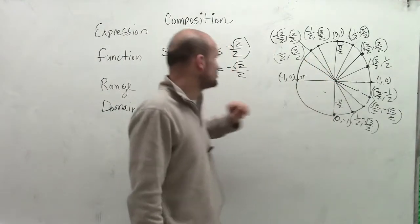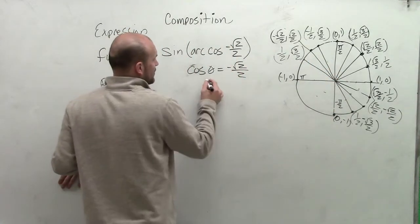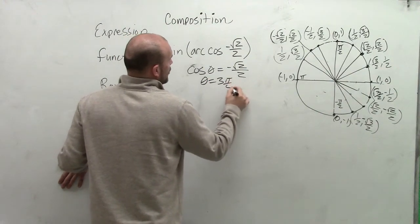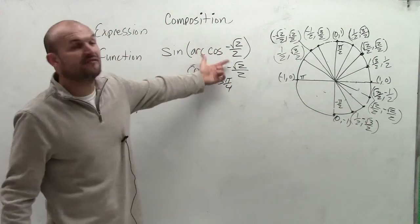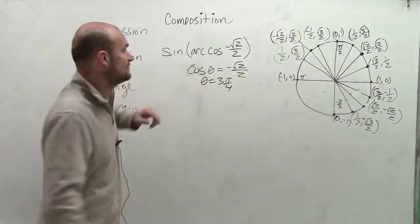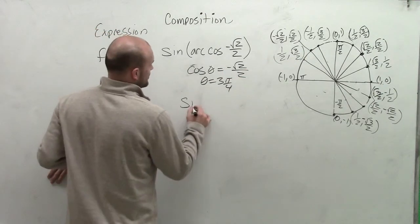So this angle is going to be at 3 pi over 4. So you could say theta equals 3 pi over 4. So now what I've done is I've evaluated for the arc cosine of negative square root of 2 over 2. So therefore,